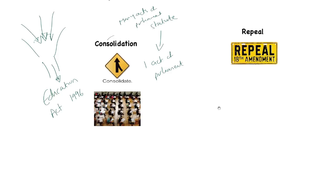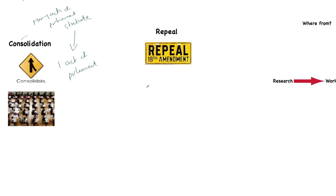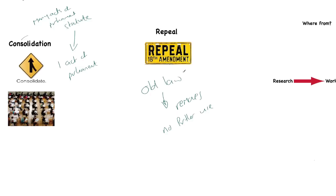Repeal is very simple. The statute books are full of old law, and some of that law is not very good. What repeal does is remove law that's of no further use — it is removed from the statute books. Once an Act of Parliament is passed, it can generally only be repealed or altered by another Act. So in order for a repeal to happen, there needs to be another Act to get rid of that Act of Parliament.